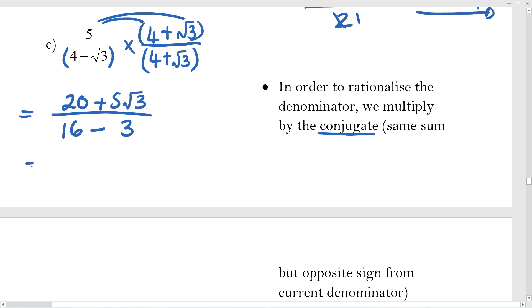Cleaning that up, I'm going to have the 20 plus the 5 root 3 on top. And 16 minus 3 is just 13. If it wasn't 13 and if it was 15 or multiple of 5, I'd look at taking out a common factor of the 20 and the 5 so that things could cancel further. But in this case it doesn't. So I just leave my answer in simplest surd form like that.